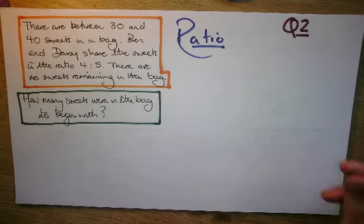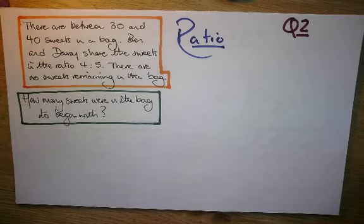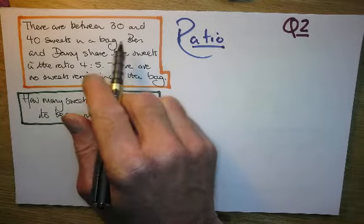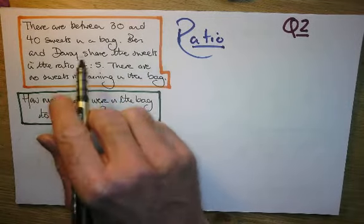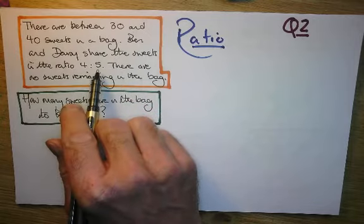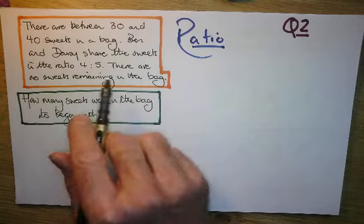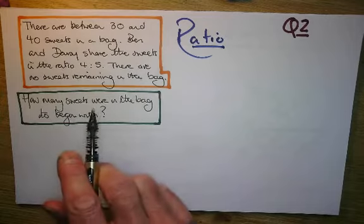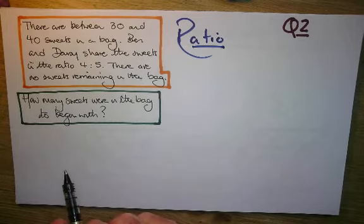This is question 2 that you can find in Corbett Maths — a really good website that also has videos. Here's the question. Let me read it out to you. There are between 30 and 40 sweets in a bag. Ben and Daisy share the sweets in the ratio 4 to 5. There are no sweets remaining in the bag. How many sweets were in the bag to begin with?